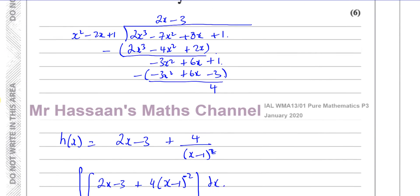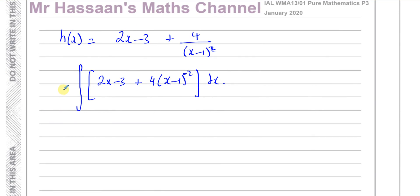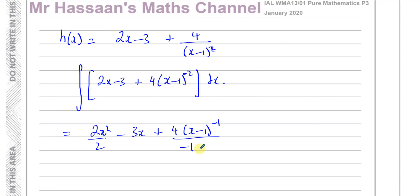Integrating: 2x squared over 2 gives x squared; minus 3x stays as minus 3x; and for 4 times x minus 1 to the power of minus 2, adding 1 to the power gives minus 1, divide by minus 1, and multiply by the differential of what's inside which is just 1. This gives minus 4 over x minus 1. Don't forget the plus c since this is an indefinite integral. So the final answer is x squared minus 3x minus 4 over x minus 1 plus c.